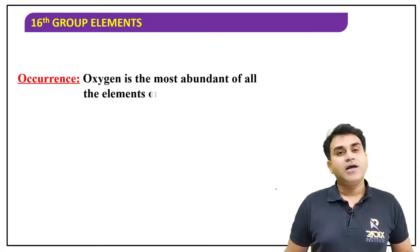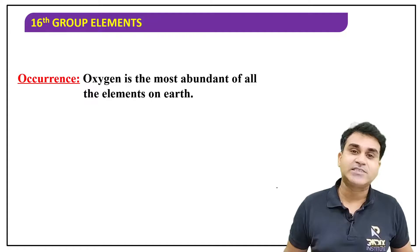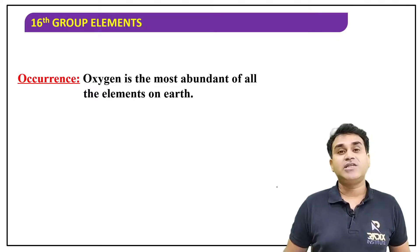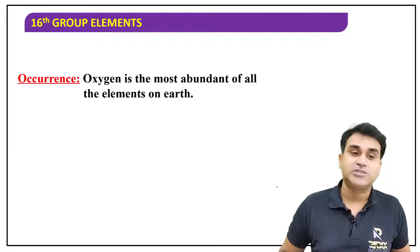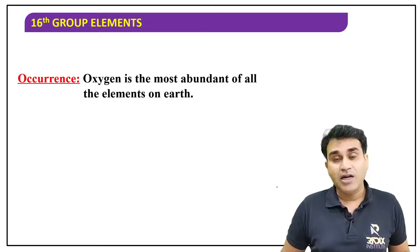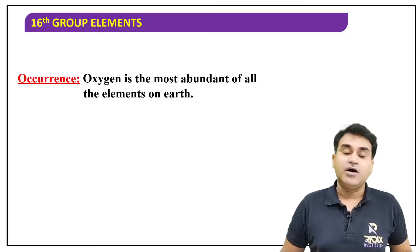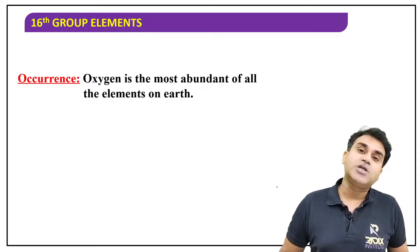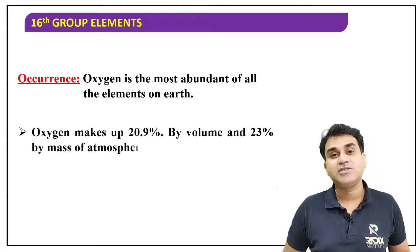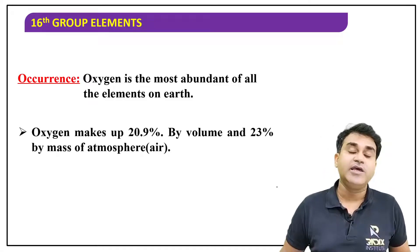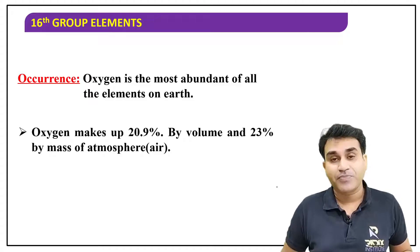Occurrence — these are general points, nothing much to understand. A few facts to remember here. Oxygen is the most abundant element on the Earth's crust. In the upper crust of the Earth, the element found in the highest proportion is oxygen. Out of all known elements, oxygen alone makes up nearly 45 to 47 percent.